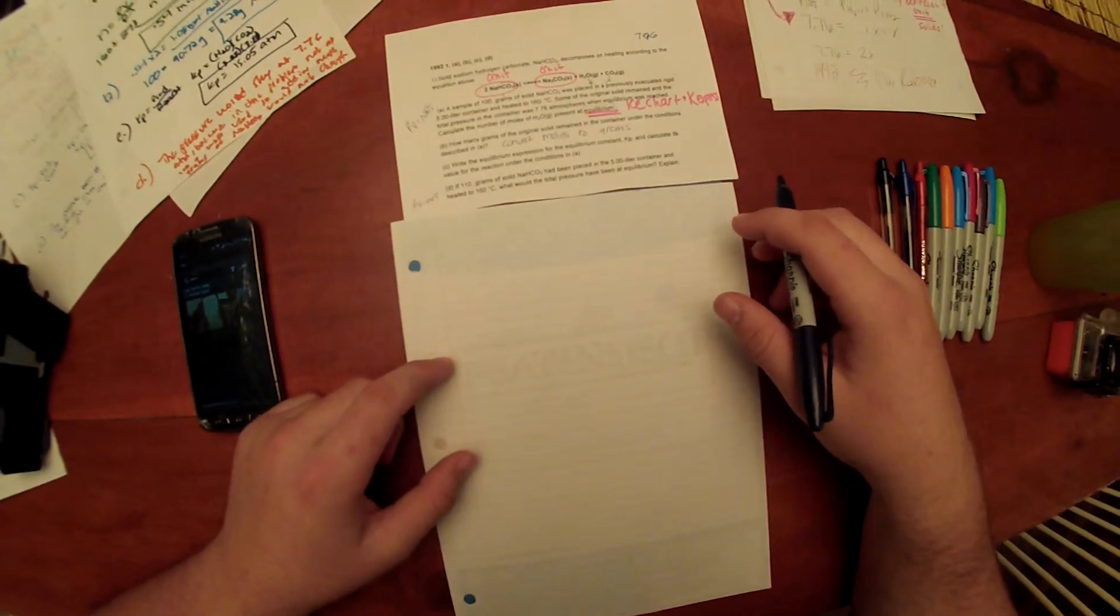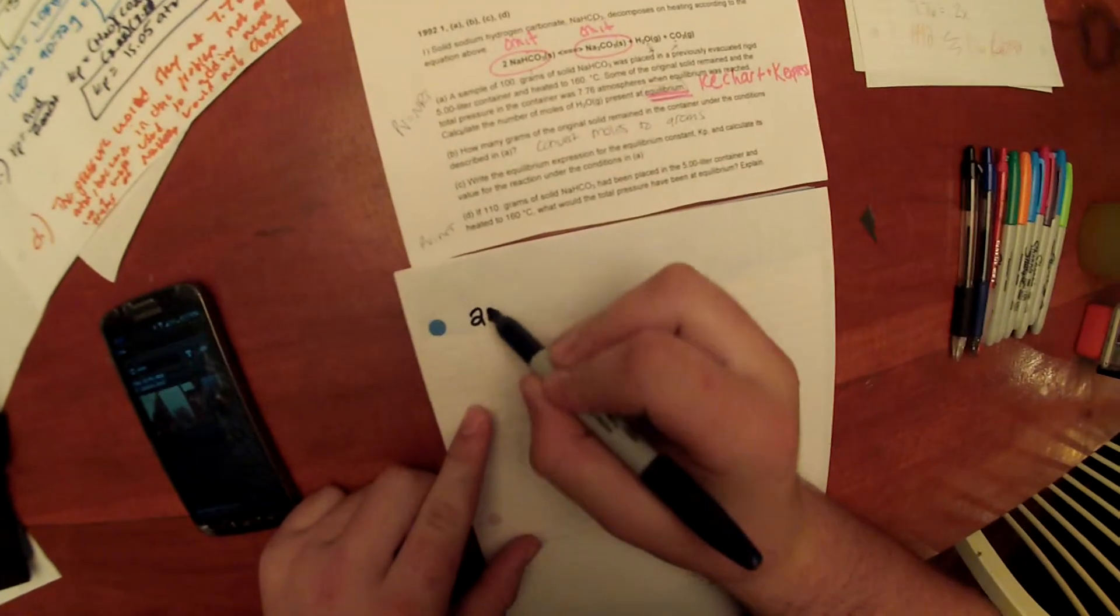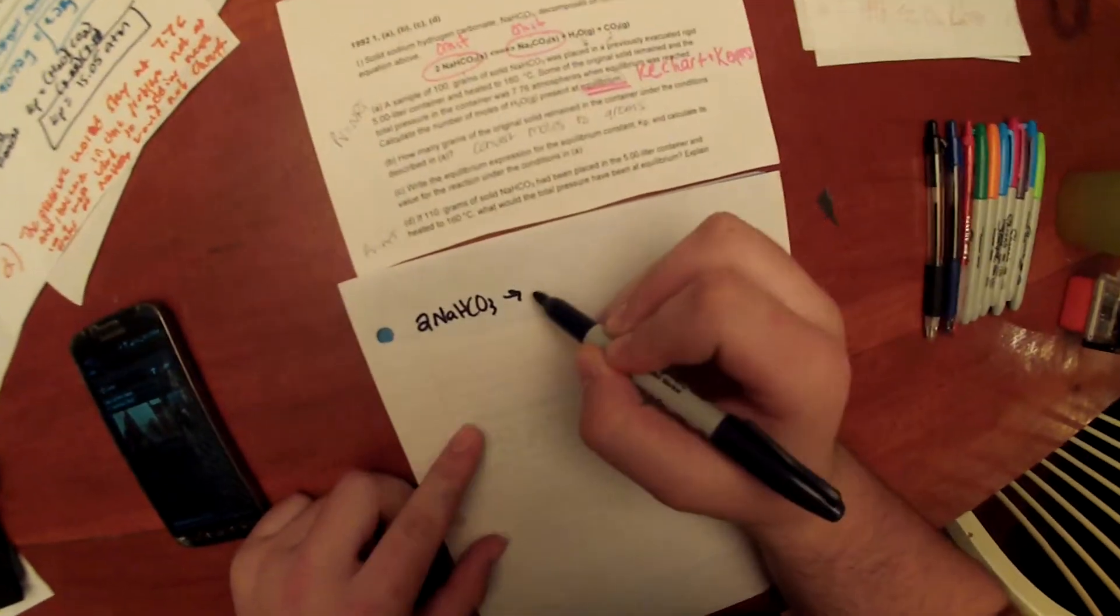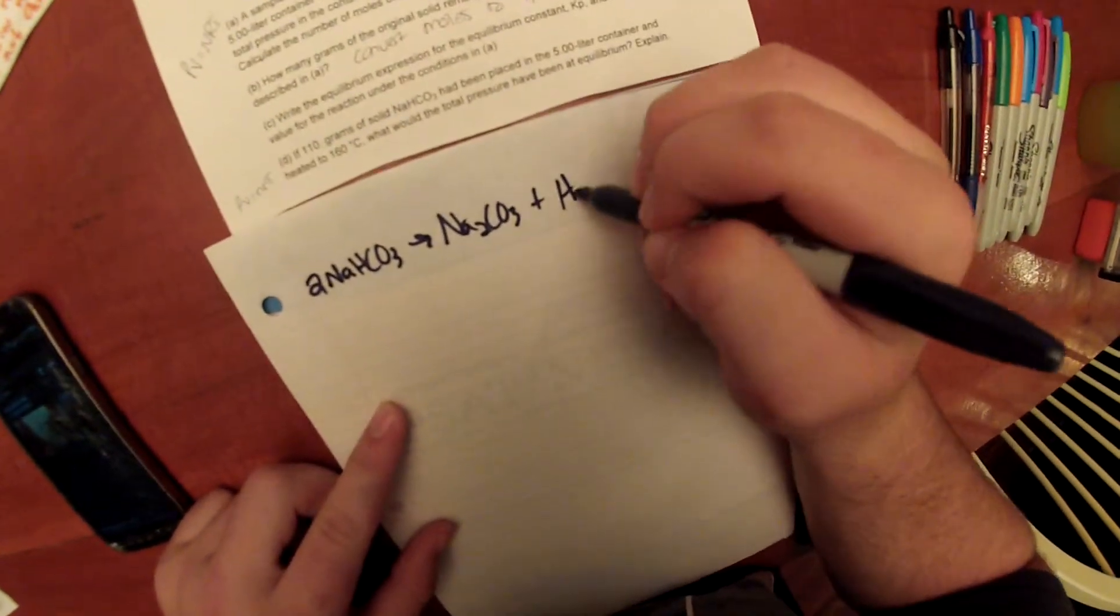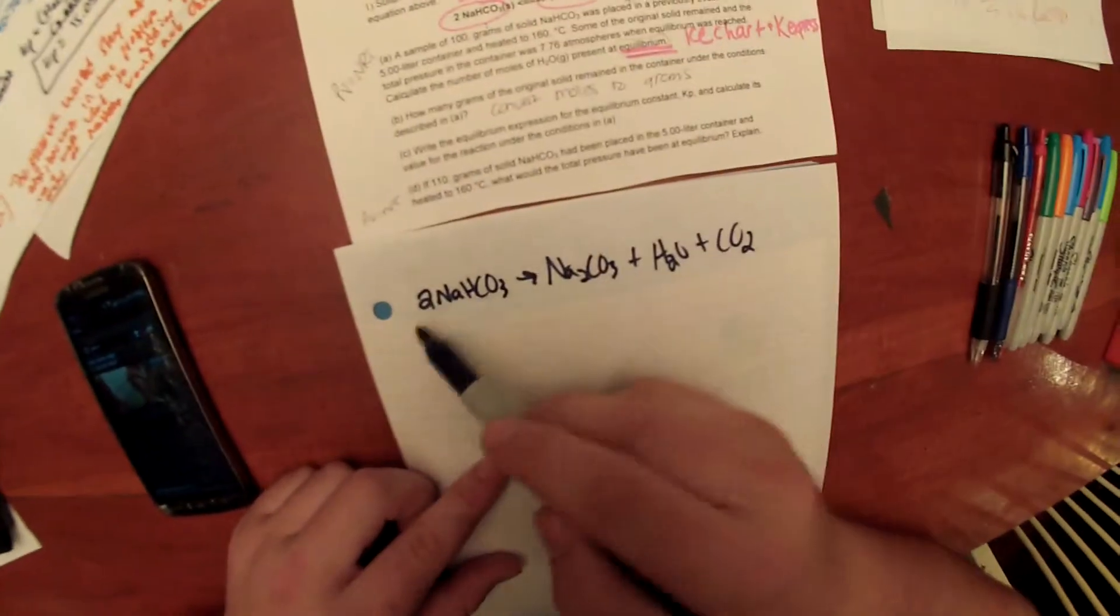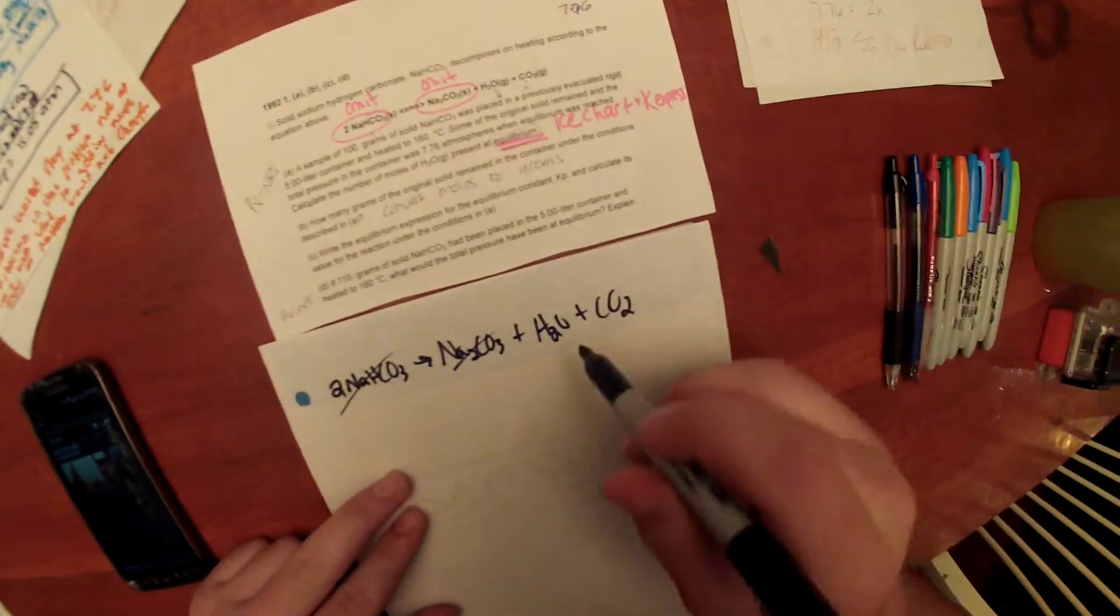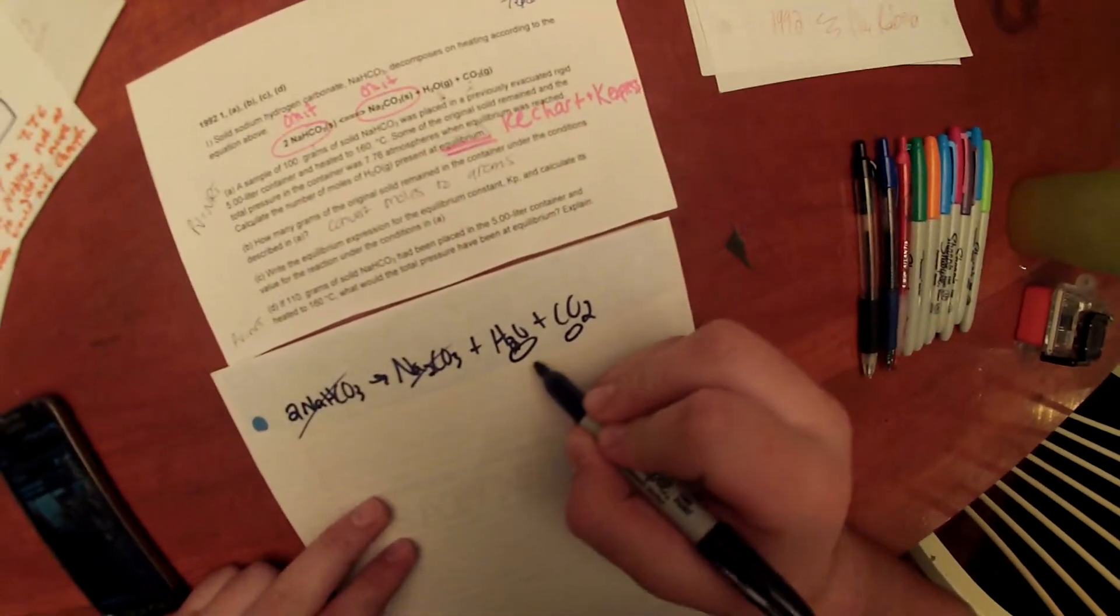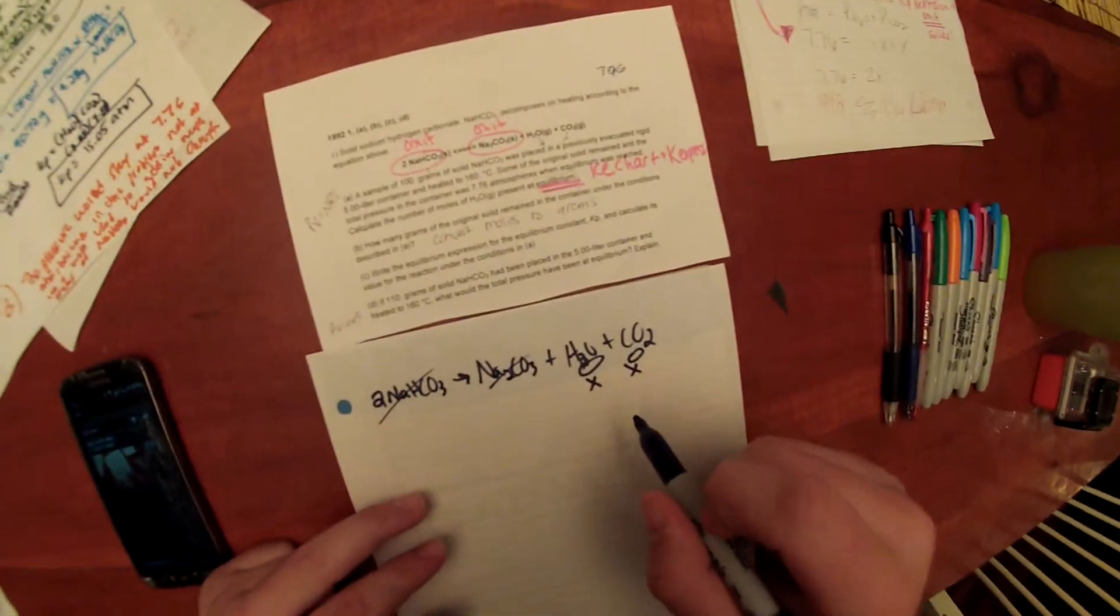Since this is an equilibrium problem, you should always start with an ICE chart, which will be written as 2 NaHCO3 gives you Na2CO3 plus H2O plus CO2. We can omit these because they're solids and we would not need them in the problem. All we're focusing on is H2O and CO2. Initially, there's zero amount of the products. At equilibrium, they're X, and these are the variables we will need.